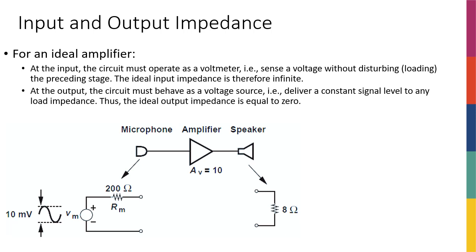In addition to gain and voltage swing that we have been talking about, for an amplifier to work properly we need to look at another aspect in our design. That is really related to input and output impedance of the amplifier. I'm going to define them first, talk about their importance, and then look at a few circuits as examples and calculate the input and output impedance of those amplifiers.